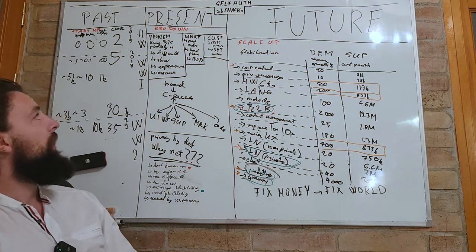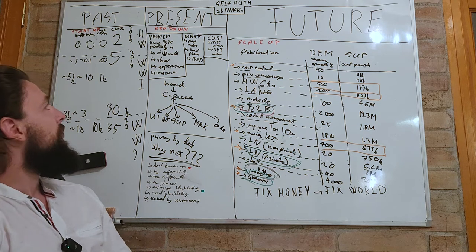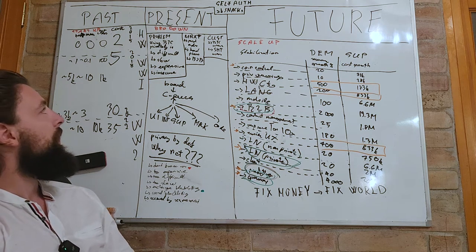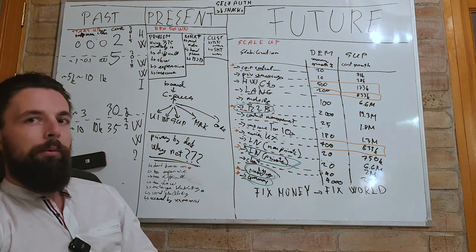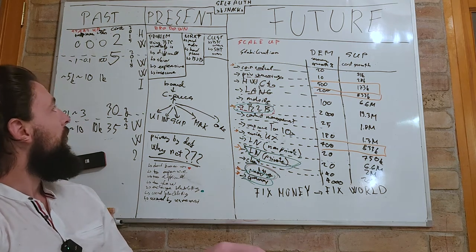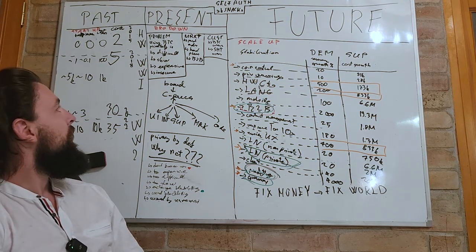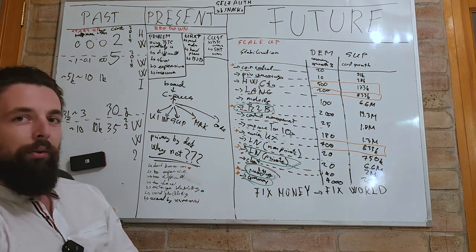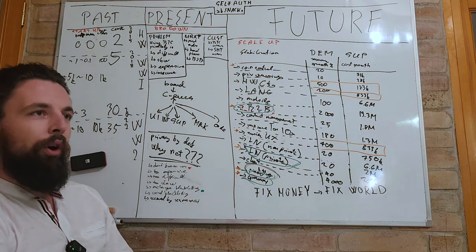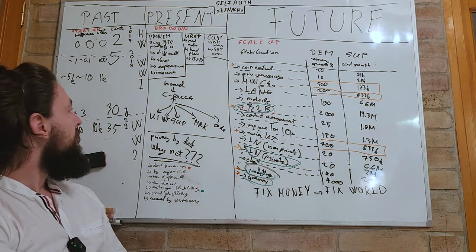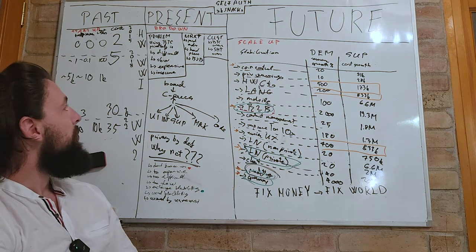And we believe that a single software wallet can address this and start a nice ecosystem. So Wasabi Wallet is designed to do that, to make it really easy and fast and cheap and secure to receive and spend Bitcoin privately. And that has a lot of benefits.